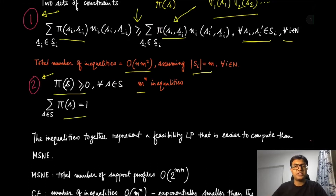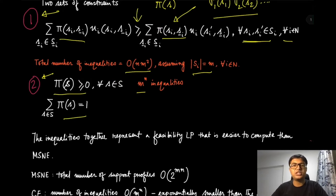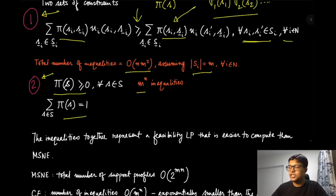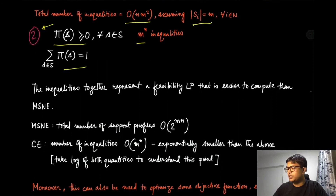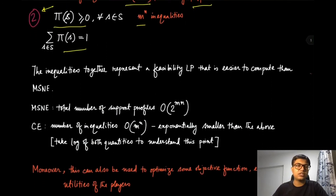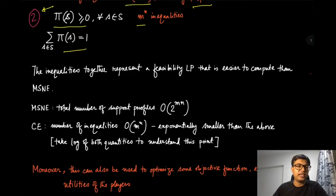Even in the case of mixed strategy Nash equilibrium we solve a feasibility LP, where we write down the conditions for it to be a mixed strategy Nash equilibrium. A feasibility LP means the objective function is a constant — you just care about solving the inequalities. Solving this feasibility LP gives you one correlated equilibrium.